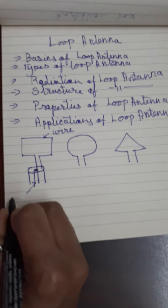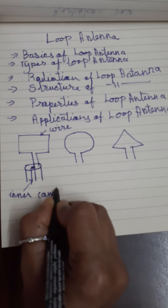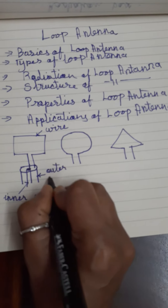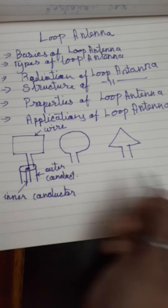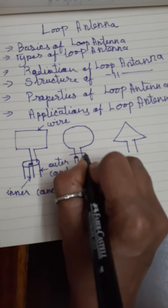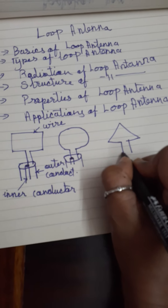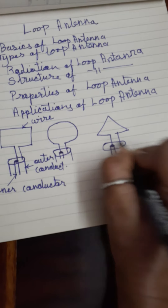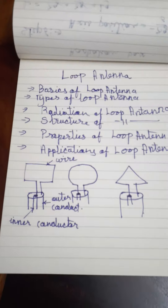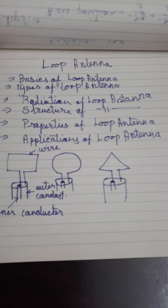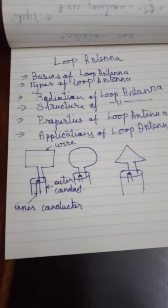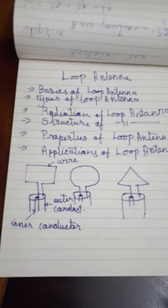Similarly, you can do it with any shape of antenna — one end to the inner conductor, the other end to the outer conductor. After this, your antenna will start radiating. We will discuss different shapes and then see how they differ with respect to each other — how their radiation pattern and properties differ.